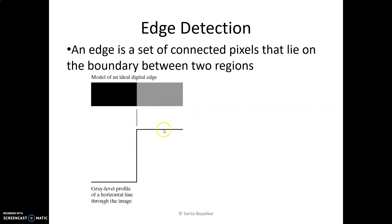This type of sharp transition, or step edge, you will find only in artificially generated images on a computer — it does not happen in real world images. Why? We know how we obtain an image by a digital camera. Digital means whatever the real world scene we are digitizing by the sensing devices used in a camera. These sensing devices perform low pass filtering or smoothing on the image. In the real world scene, the maximum frequency present in the image is infinite, and for the digitization process we apply the Nyquist criteria — the sampling rate should be twice the maximum frequency in the image.